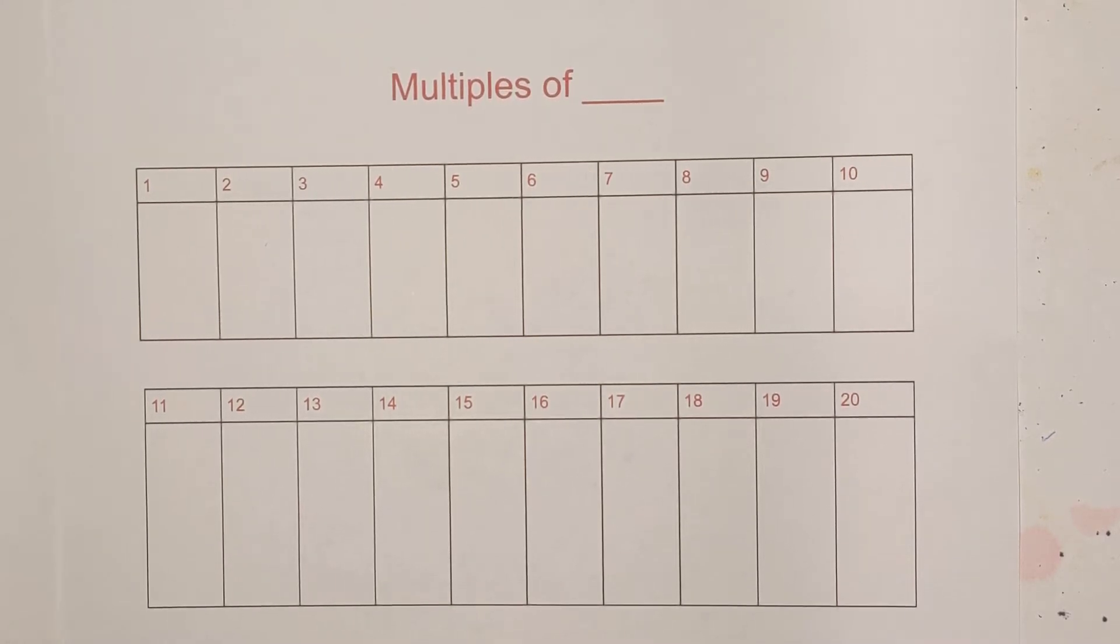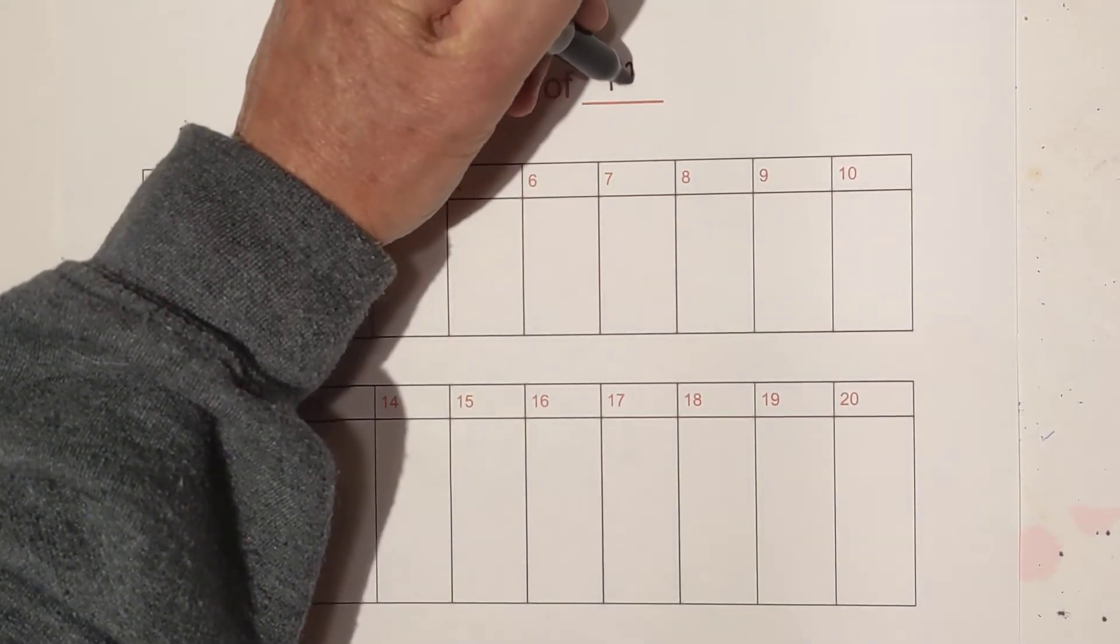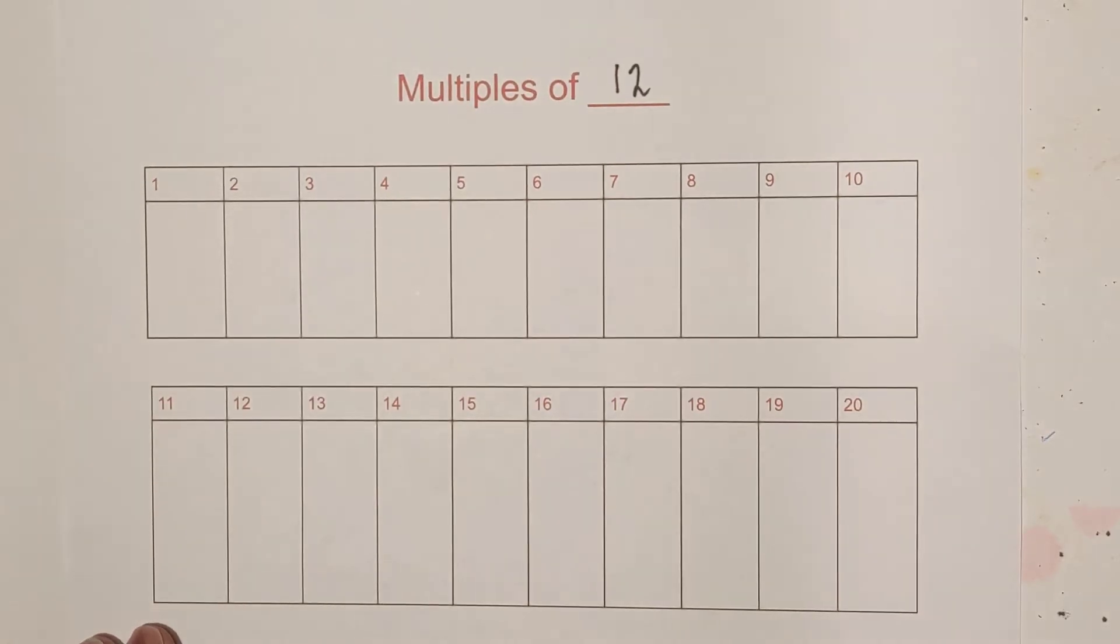Welcome to Moo Moo Math and Science and the multiples of 12. So let's get started and I'll go up to 20 places.